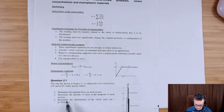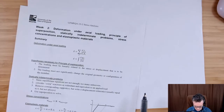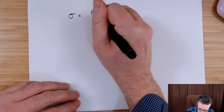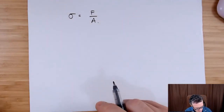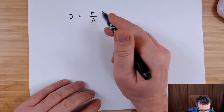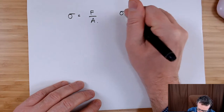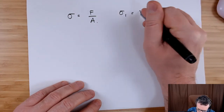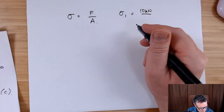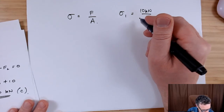Stress is force divided by area. So the stress being experienced in a particular midsection will use the internal force. The stress for the top section will be 10 kilonewtons divided by its area — the top section is 20 millimetres in diameter.